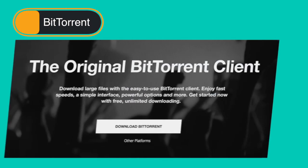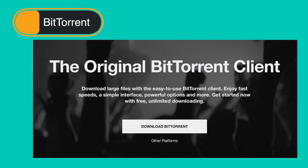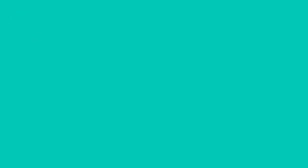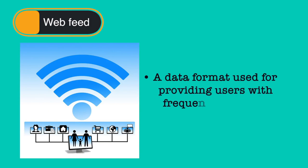BitTorrent is a peer-to-peer file sharing protocol used for distributing large amounts of data. A web feed is a data format used for providing users with frequently updated content. If you subscribe to a feed on a particular website, that feed will come to your browser and tell you the updated content so that you can click on it and read that content without having to check the website repeatedly.